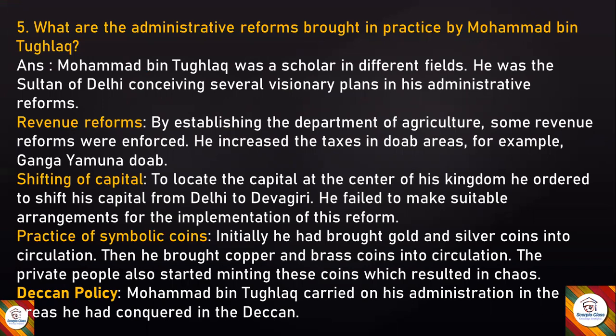The next reform was the shifting of the capital. To locate the capital at the center of his kingdom, he ordered the capital to be shifted from Delhi to Devagiri. However, he failed to make suitable arrangements for the implementation of this reform. The next reform was the practice of symbolic coins.